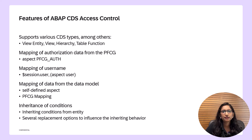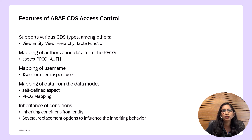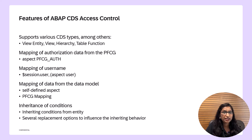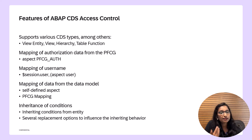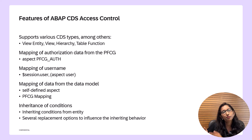Important features are: access control can be defined for a view entity, view hierarchy, and table functions. Access conditions can be based on literal values, on classic authorizations of the current user based on authorization object — that is the PFCG conditions — or on data from other CDS entities defined by a selection with the current user. We will check this in our demo later. Inheriting the conditions is another key feature where the conditions defined in the access control of one entity can be inherited by other entities, which avoids duplicates.